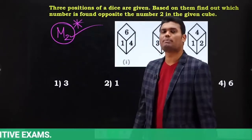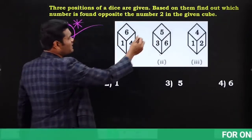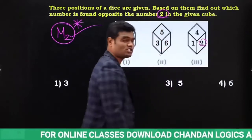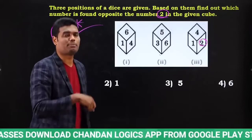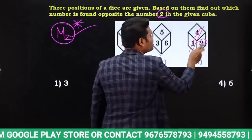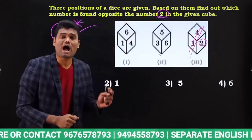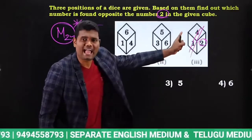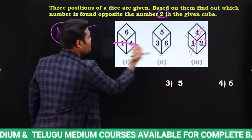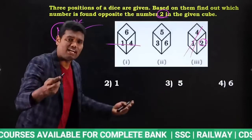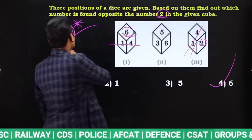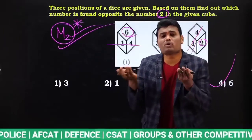Here I have three views and need to know what is opposite to 2. First check where 2 is — here it is. Apply Model 2 first. The two common elements with 2 are 1 and 4. I need to find a 1-4 combination elsewhere. I already have 1-4 combination here, and the same 1-4 combination I have in another view. Since both views share the 1-4 combination, directly I can say 2 opposite is 6. Just a fraction of seconds. That is why Model 2 is preferred — it's very fast and very accurate.